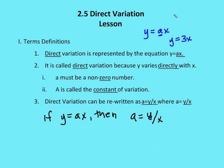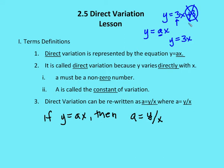The other requirement is that you're not going to have an additive constant. For example, y is equal to 3x plus 3 is a linear equation in slope-intercept form, but if you have that additive constant, we no longer have direct variation. In the equation you simply have y, x, and the constant of variation a, which must be non-zero and is the coefficient in front of x.